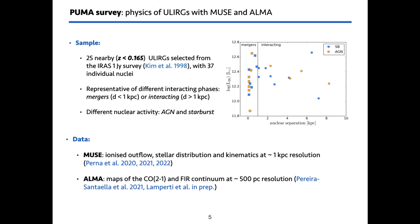You can see the sample in this diagram with the nuclear separation and the infrared luminosity. In the sample we have about half of the targets with an AGN signature in the nucleus, classified based on mid-infrared and optical diagnostics, and the other half are starburst dominated.